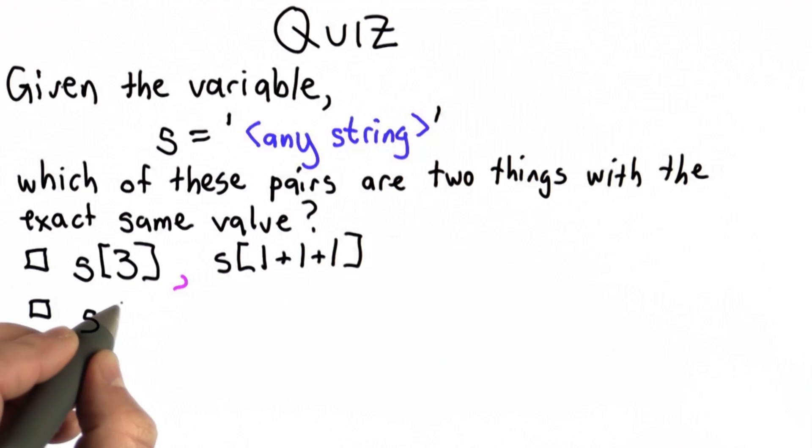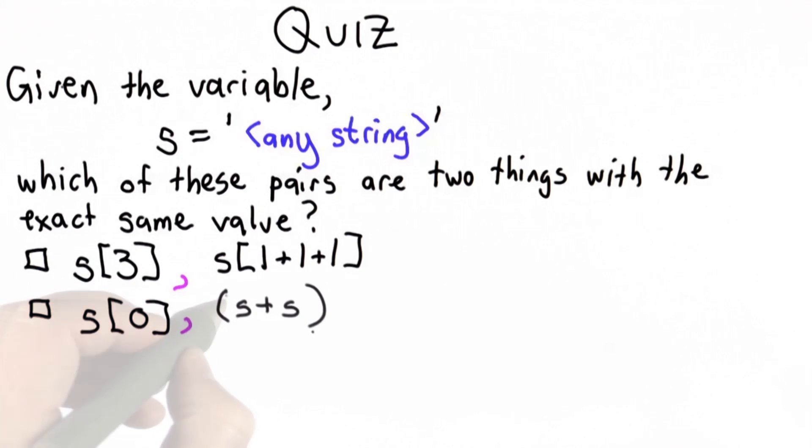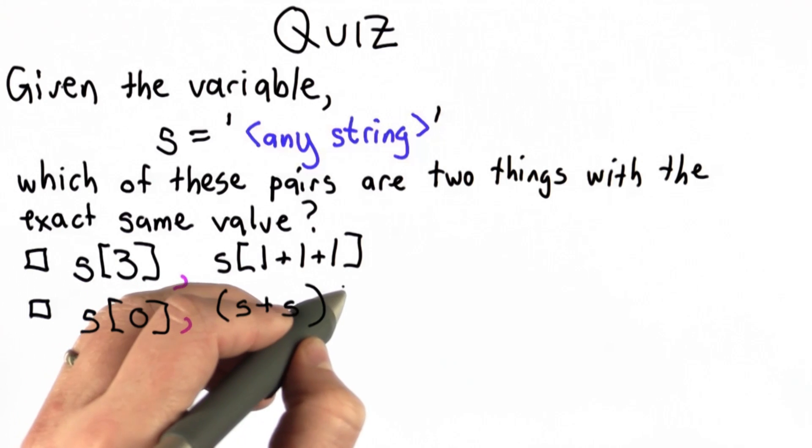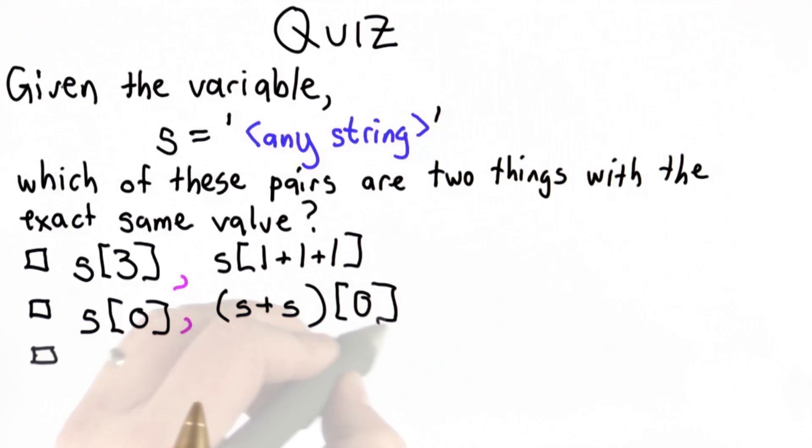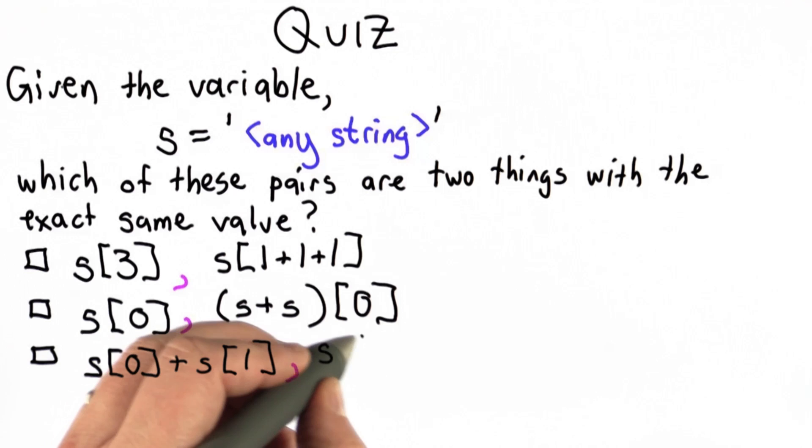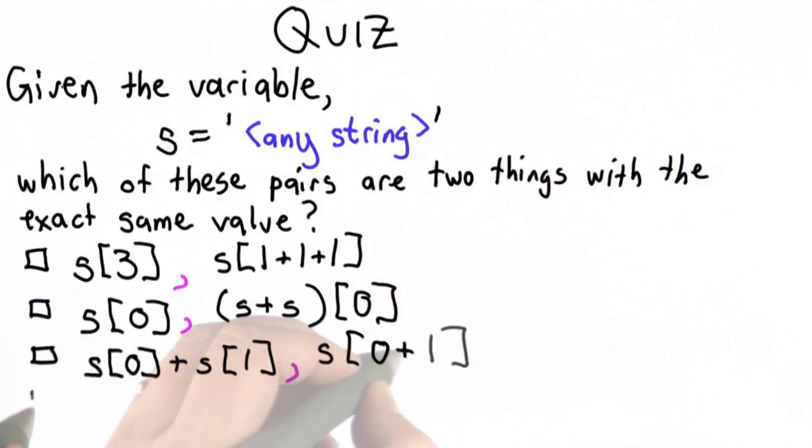Second, we have s index 0 paired with (s+s) index 0. For the third choice, we have s index 0 plus s index 1 paired with s index 0 plus 1.